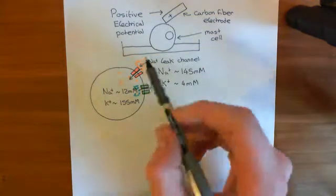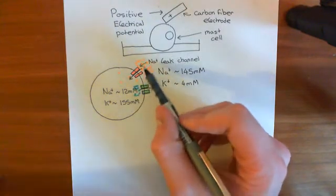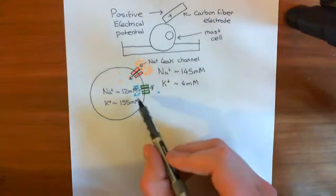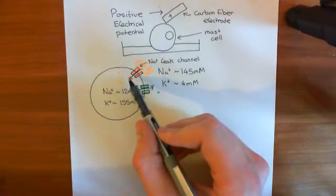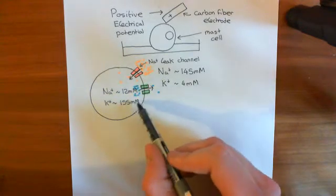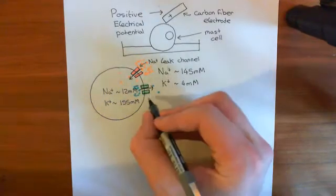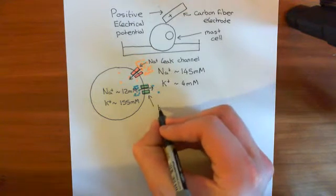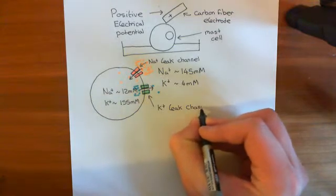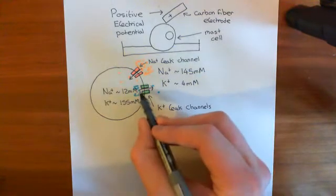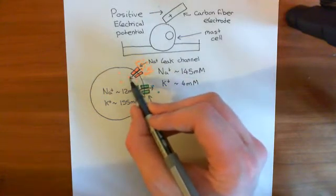We've discussed how, because of the concentration gradients in sodium and potassium across the cell membrane, you're going to get a net movement of sodium into the cell and a net movement of potassium out of the cell. But the net movement of potassium out of the cell is bigger than the net movement of sodium into the cell for two reasons: firstly, the concentration difference in potassium is greater, and also because the number of leaky potassium channels is greater than the number of sodium leak channels. So overall, the amount of positive charge that moves out of the cell in the form of potassium ions is greater than the amount of positive charge that moves into the cell in the form of sodium.